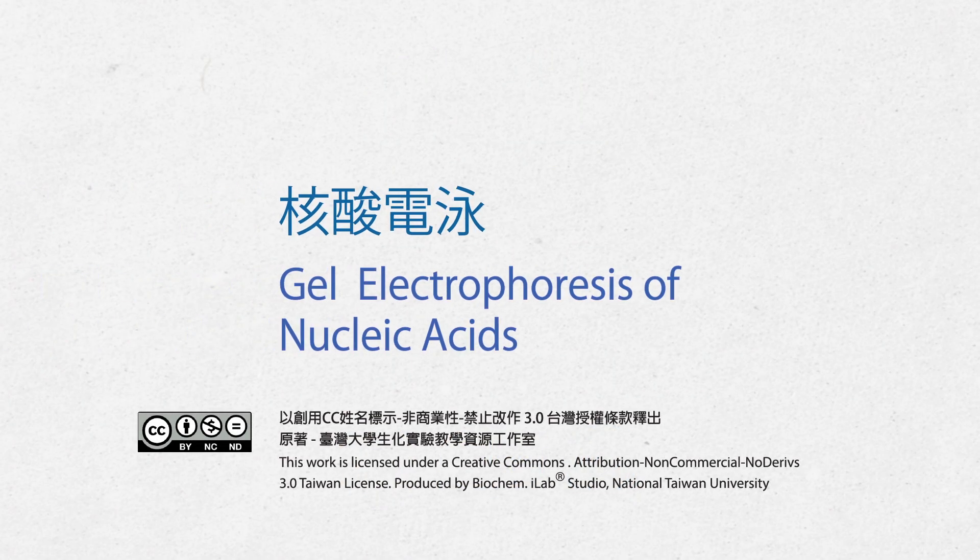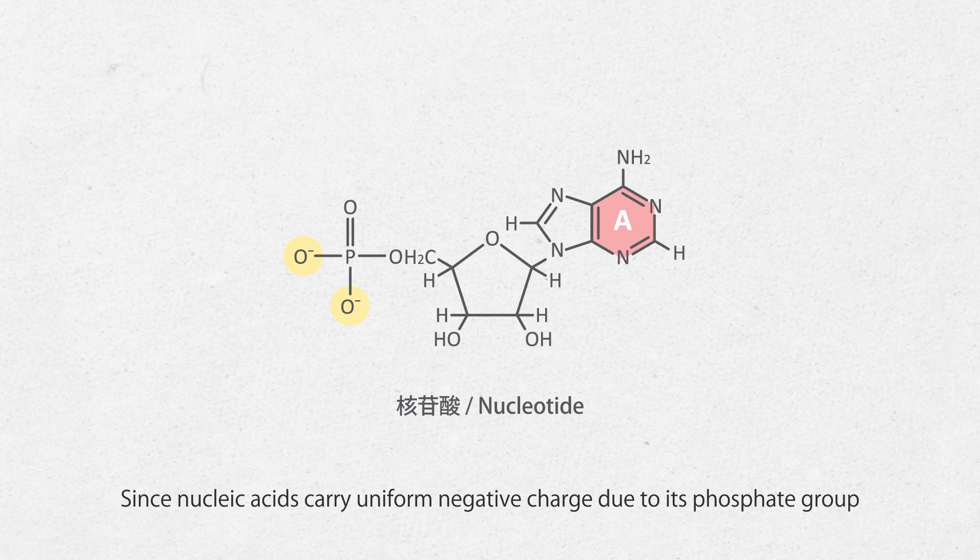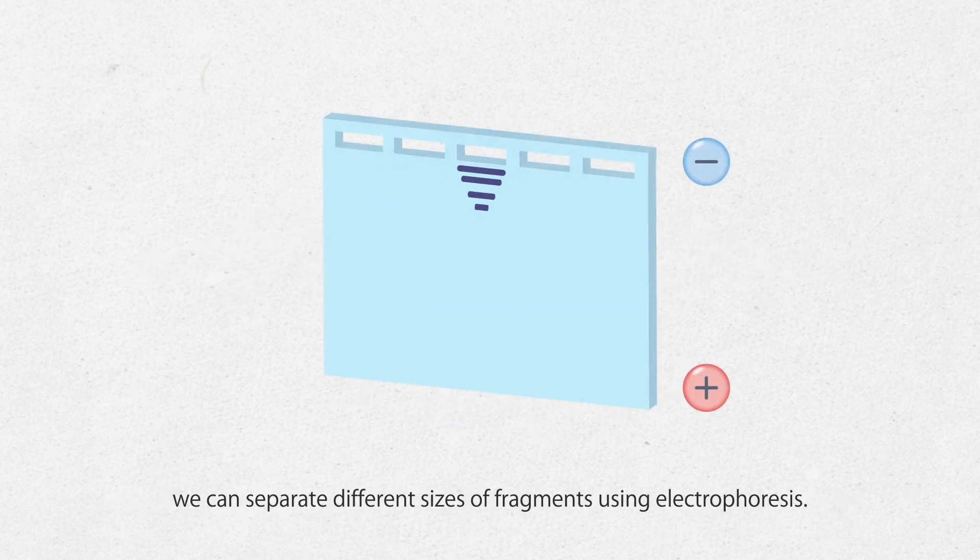Gel electrophoresis of nucleic acids. Since nucleic acids carry uniform negative charge due to their phosphate groups, we can separate different sizes of fragments using electrophoresis.